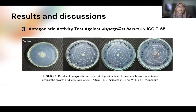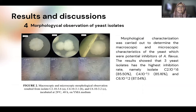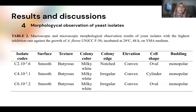For the strongest antagonistic activity, we found three potential yeast that can inhibit Aspergillus flavus NGCC F55. We performed the morphological characterization and found that isolates C2, C4, and C6 have good ability to produce antagonistic activity against Aspergillus flavus. For the morphological observation of yeast isolates, all of these potential yeast have a smooth surface mold, with a milky white colony. The elevation is convex, cell shape is oval, and budding is monopolar.